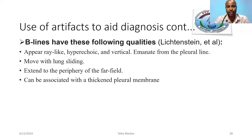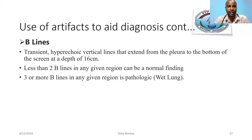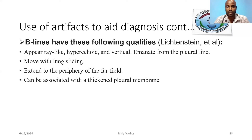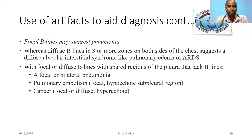B-lines are transient hyperechoic artifacts. The clinically significant artifacts are A-lines and B-lines. There are also Z-lines and C-lines, which are not as significant for clinical purposes. We use mainly A-lines and B-lines in our assessment. Fewer than two B-lines in any region can be normal; if greater than three, it indicates wet lungs or pathological B-lines.